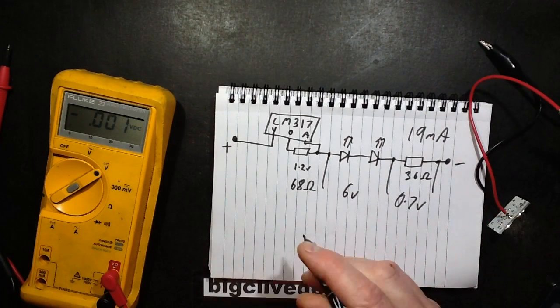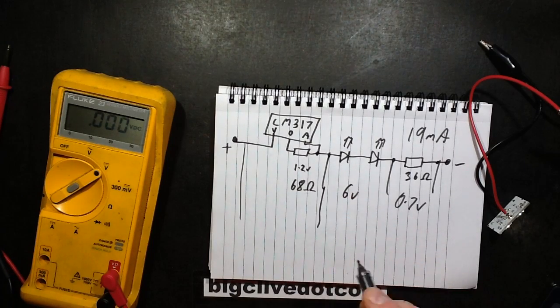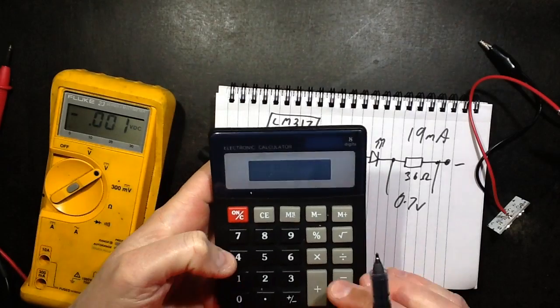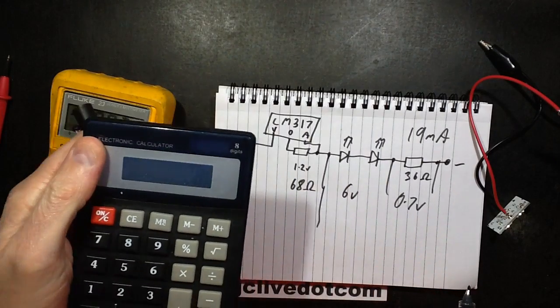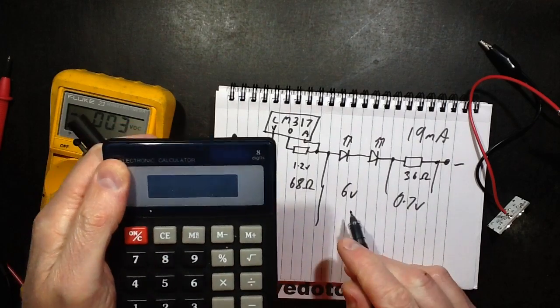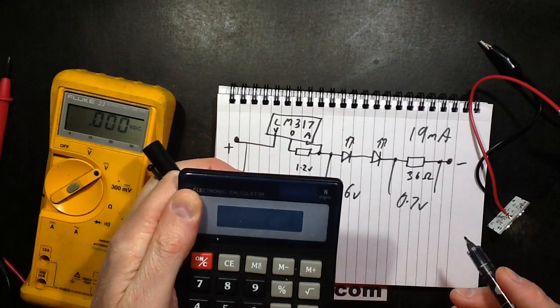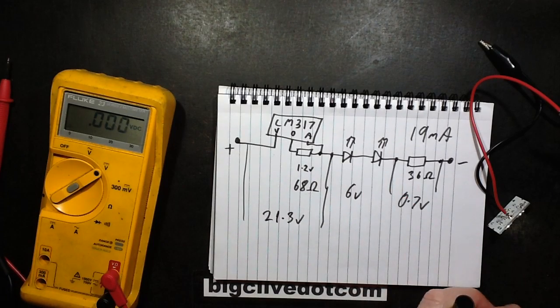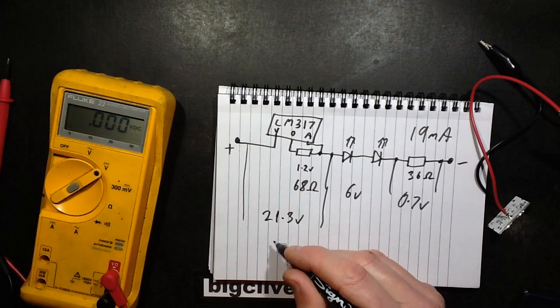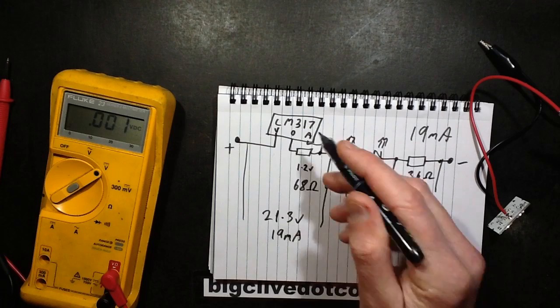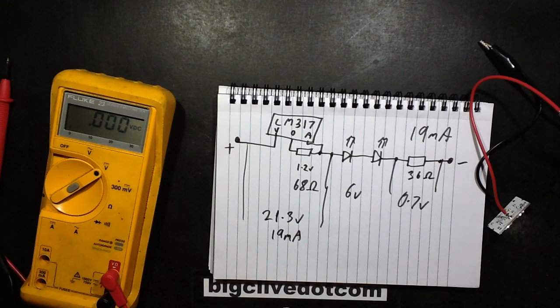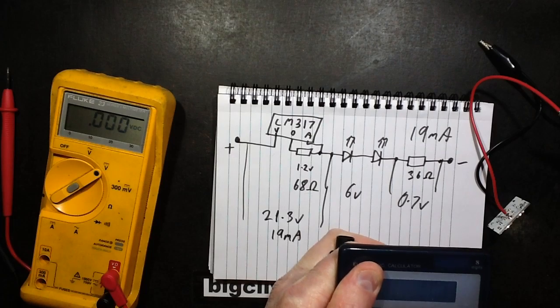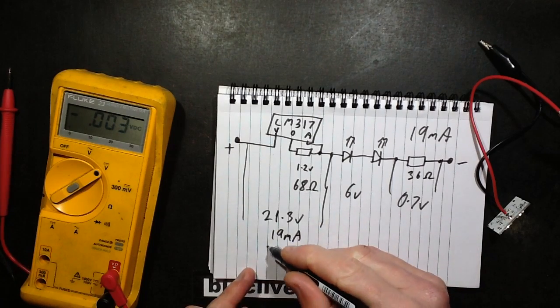So that's 6 volts across the LEDs. And if you consider then that on the full 28 volts of a lorry supply, that's going to be 28 minus 6.7 for the total of the LEDs and that resistor equals 21.3 volts to drop across the regulator. And if that's going to be at 19 mA, the power dissipation in that regulator is going to be 21.3 times 0.019 equals about 0.4 watts.